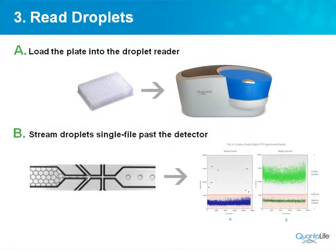We provide software for actually reading the droplets — the positives and negatives. The graph here shows droplets through time: droplet one through droplet 20,000. For every droplet we plot the fluorescence on the y-axis. The negative droplets have low fluorescence just from the poorly quenched probes, and these other droplets are the ones that have amplification in them, meaning the PCR reaction happened and there was a target present.